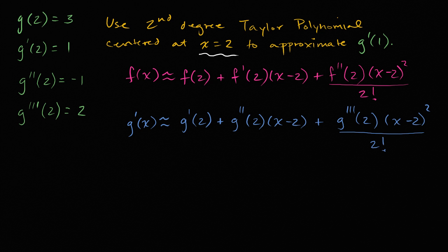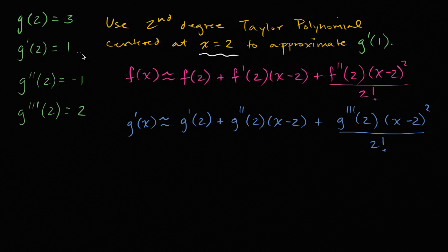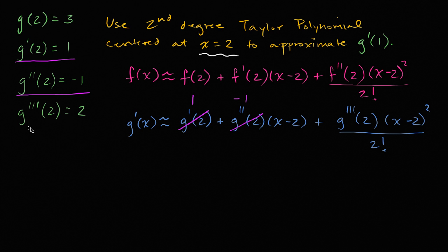Now they tell us what these values are. They tell us g prime of two is equal to one, so that term is one. G double prime of two is equal to negative one, so that term is negative one. And the third derivative of g evaluated at two is two, and two over two factorial — two factorial is just two — so that and that cancel out.